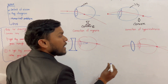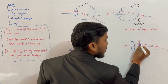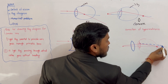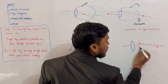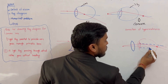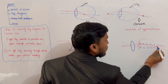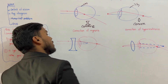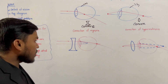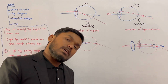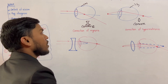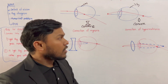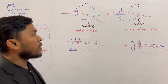So, hypermetropia — where are we? The main image forms behind the retina. This is the first time we are going to go to the exam, so this is the correction of myopia and the correction of hypermetropia.